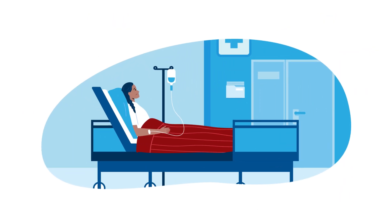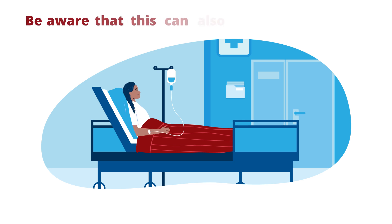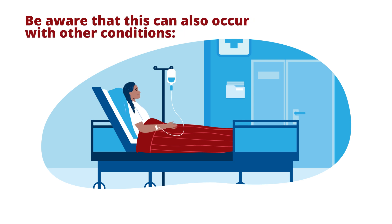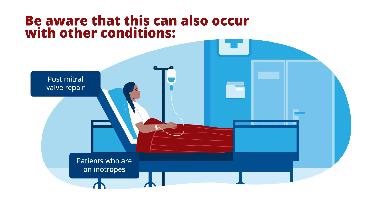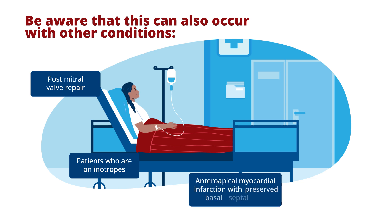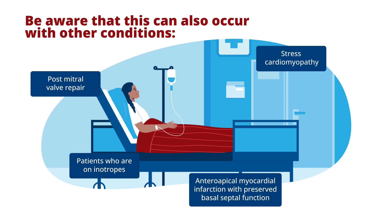While dynamic left ventricular outflow obstruction is discussed here in the context of obstructive hypertrophic cardiomyopathy, one should be aware that this can also occur with other conditions. This may include patients with hyperdynamic left ventricular function or on inotropes, patients post mitral valve repair, those who have had an anteroapical myocardial infarction, or a stress-related cardiomyopathy with preserved basal septal function.